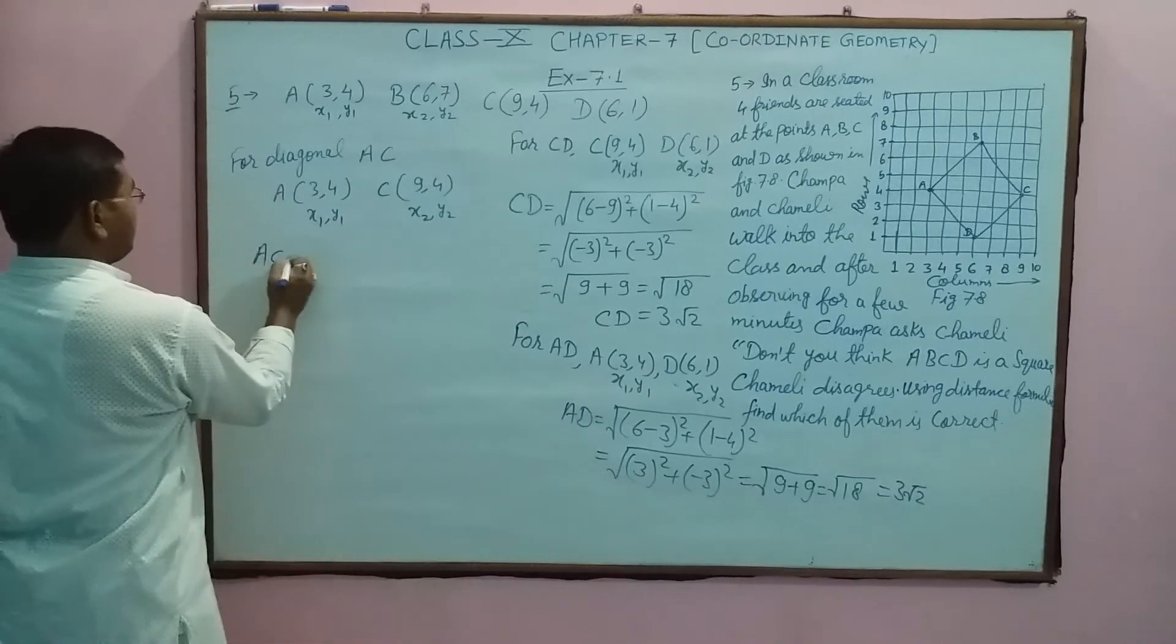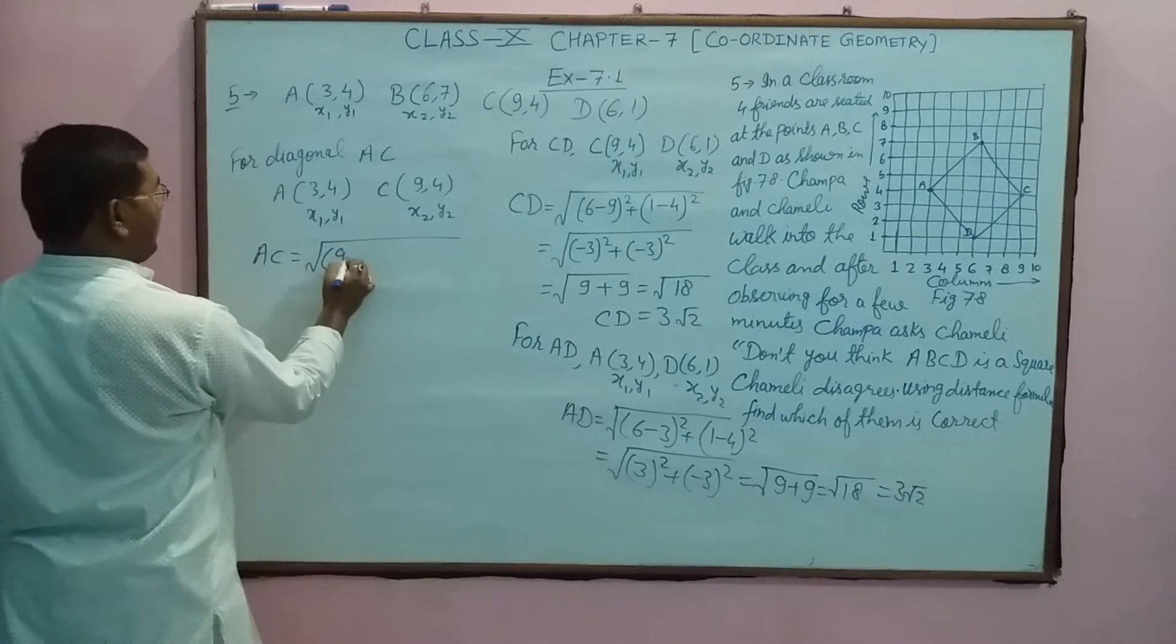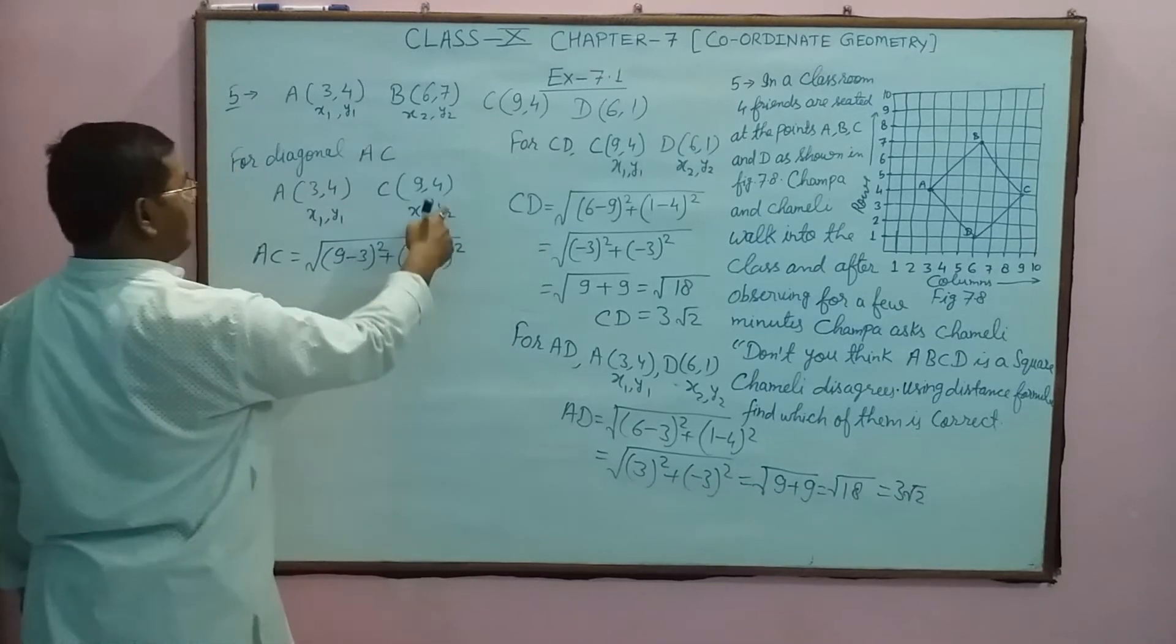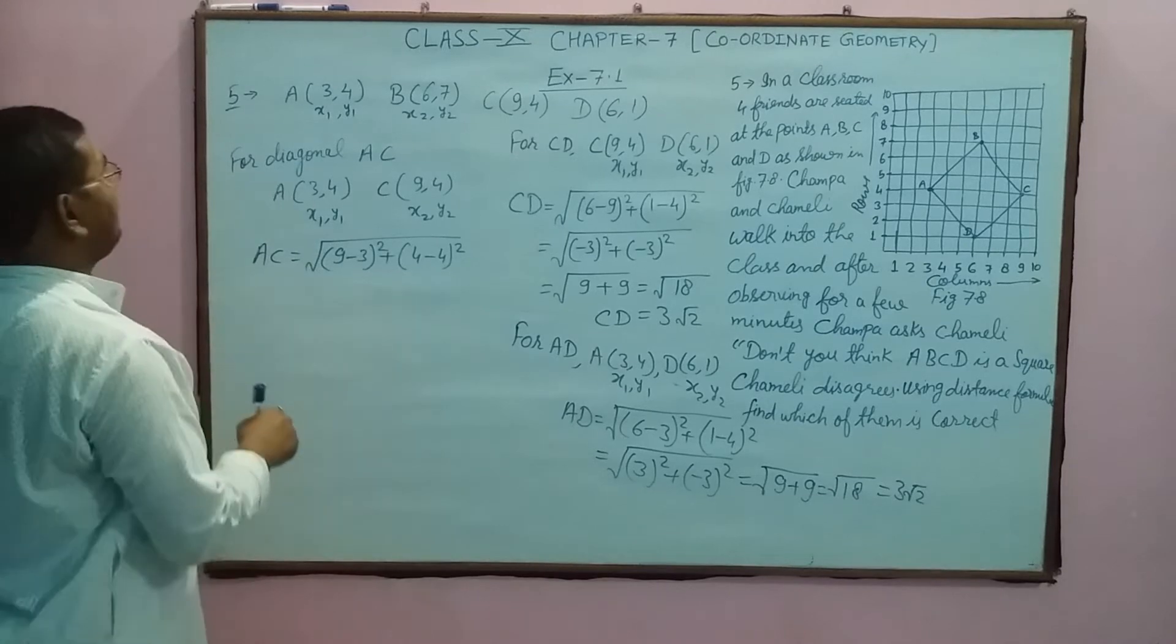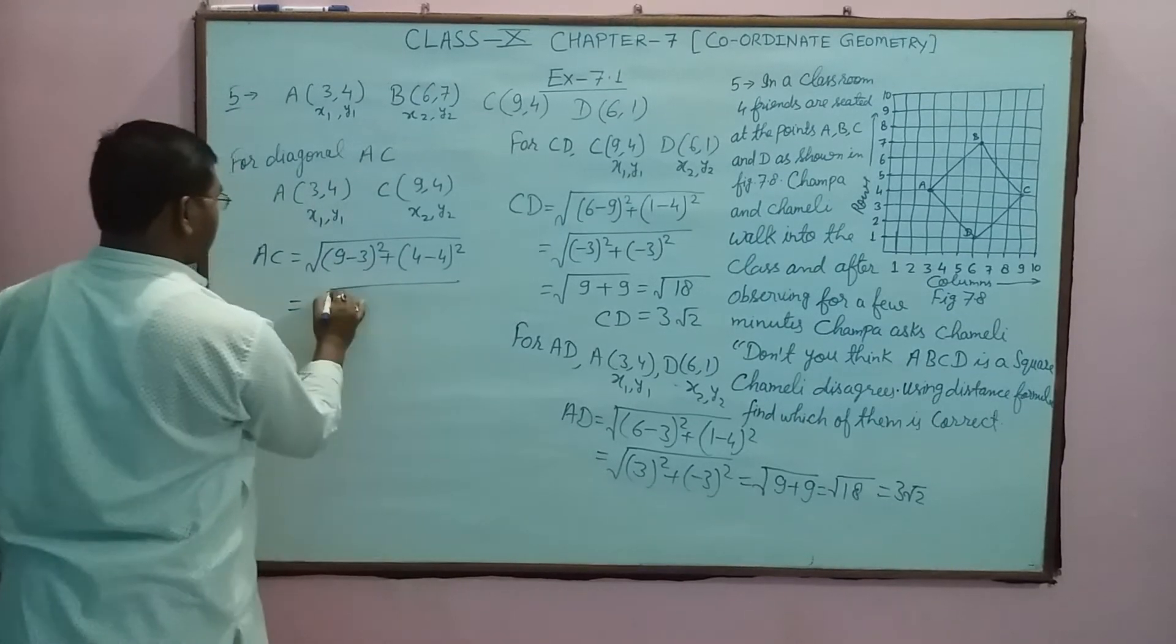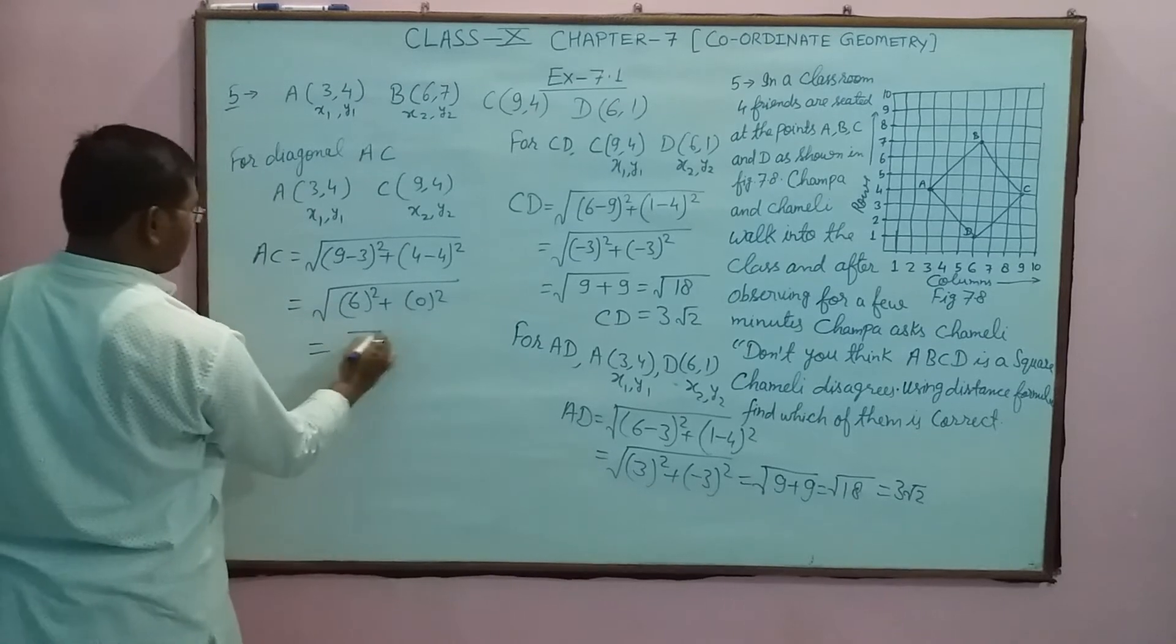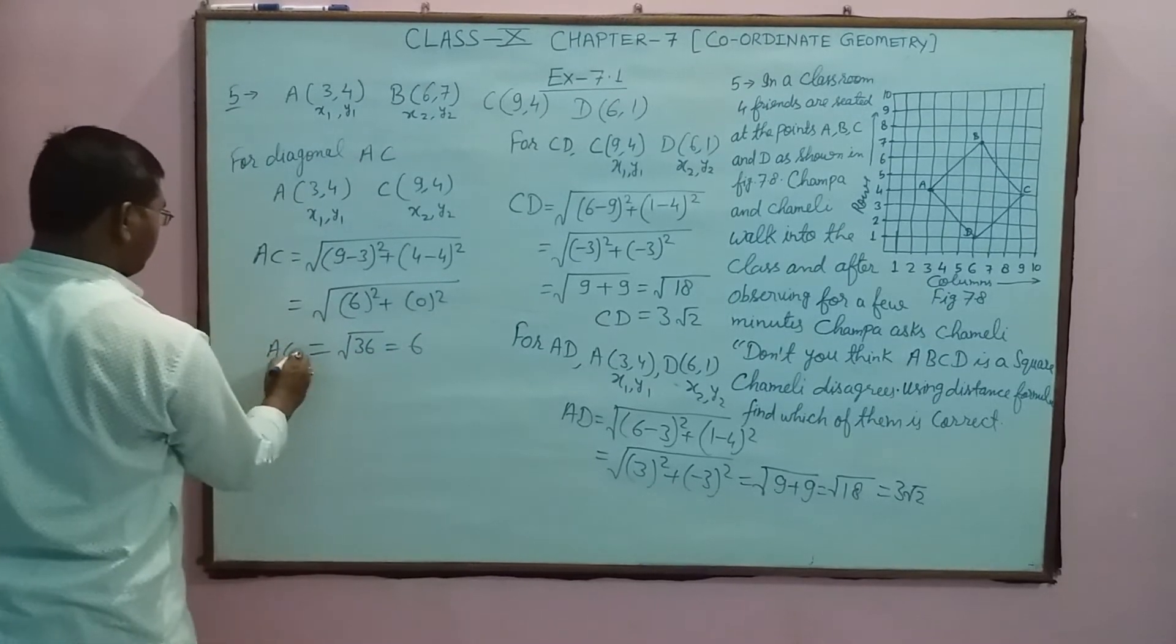So where you will see diagonal equal length, find AC. You will use distance formula: x2 minus x1 squared plus y2 minus y1 whole squared. So it is 9 minus 3 is 6 squared plus 4 minus 4 is 0 squared, square of 36. AC equals 6.